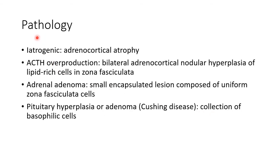Let us see about the pathology of Cushing syndrome. The pathology of the adrenal gland depends on the etiology. In case of iatrogenic causes, there will be adrenocortical atrophy. In case of ACTH overproduction, there will be bilateral adrenocortical nodular hyperplasia of lipid-rich cells in the zona fasciculata of the adrenal gland.